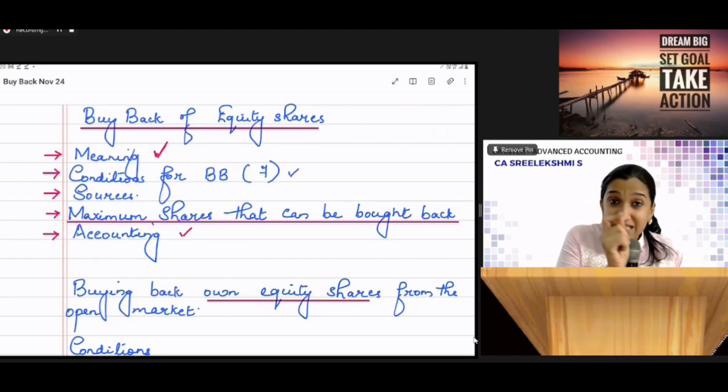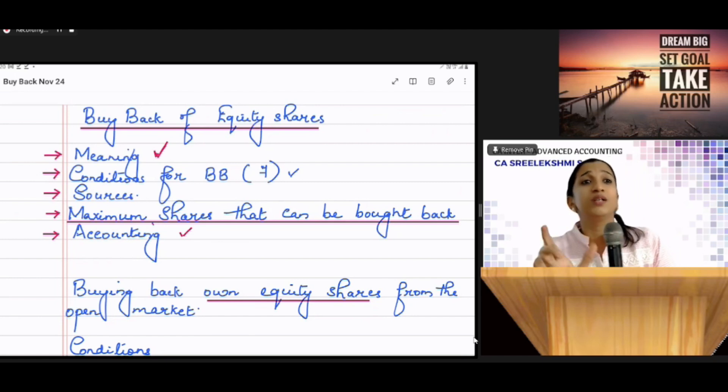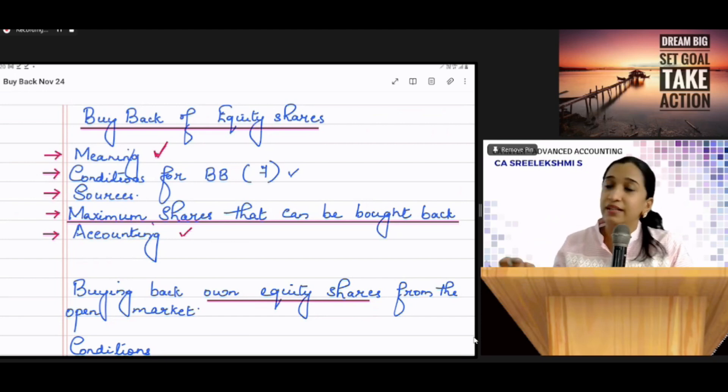Then time limit is within 12 months from the date of resolution, date of passing resolution. Then only fully paid shares can be bought back. And once equity shares are bought back, it should be cancelled within 70 days.